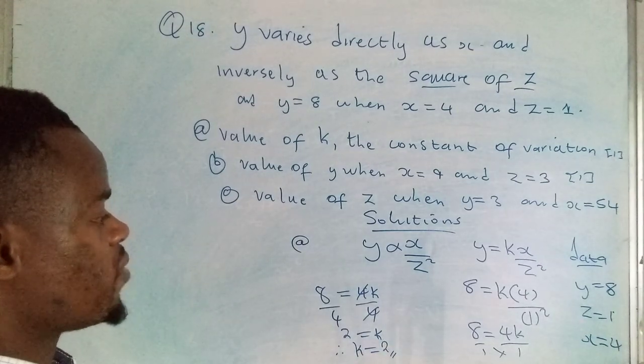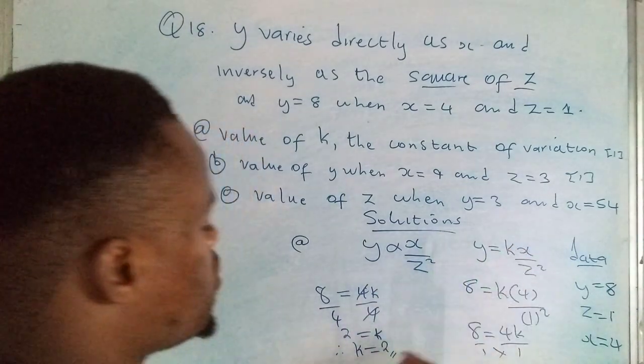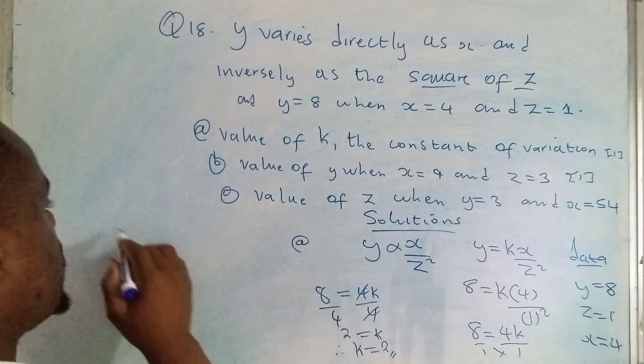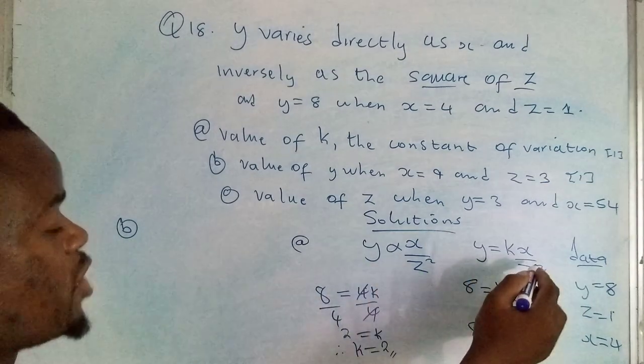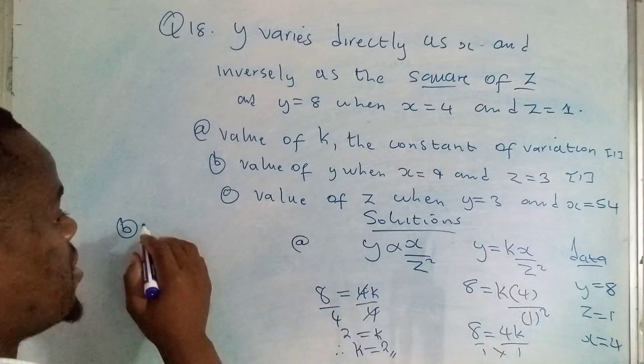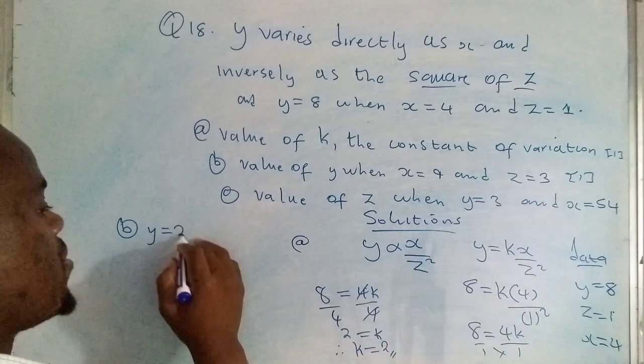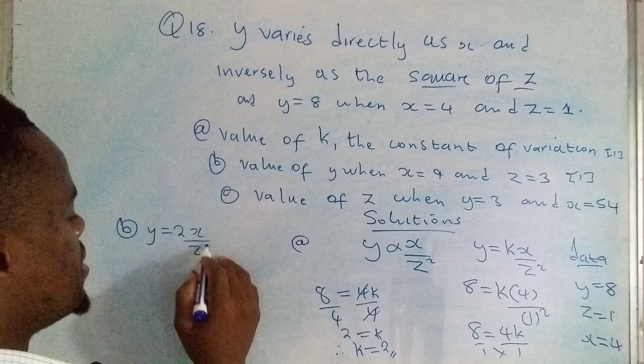After having found that one, we're going to change our equation here. Instead of writing k, we have to be writing 2 there. I'll indicate b here, but I will need to move on with this same equation. So that's y is equal to, k is now 2, then x over z squared.